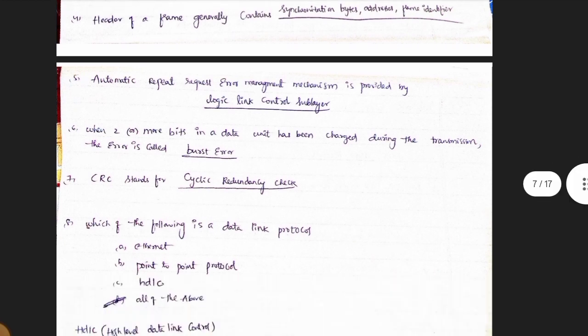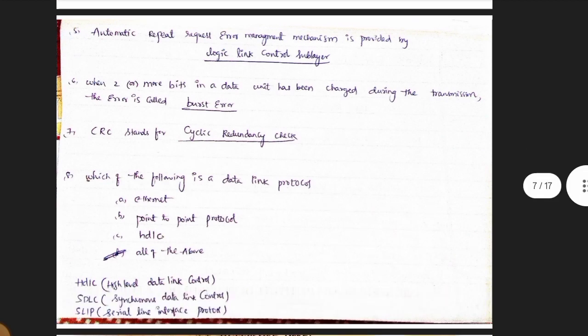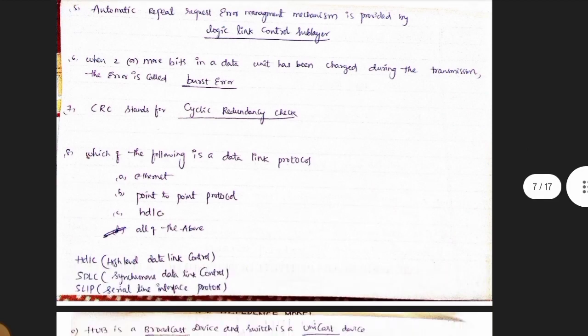7th one: CRC — Cyclic Redundancy Check. 8th one is also covered in this section.